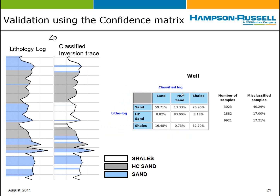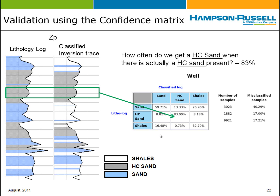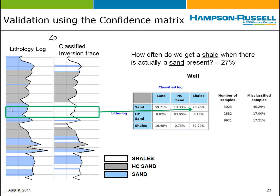This process is also called a confidence matrix — the same thing, just with different terminology. Applying it to our lithologic case: we have a lithology log, which is the true answer, and to the right a classified trace from the litho-SI process. These are not identical because the process never works perfectly. We can summarize how well it worked by the matrix. For example, counting all points where it was a hydrocarbon sand: 83 percent of the time it correctly predicted HC sand. By contrast, when it was a wet sand, it sometimes classified it as shale — 27 percent of the time — which may or may not be a problem depending on the situation. We use the confidence matrix to summarize how well the system distinguishes the classes.